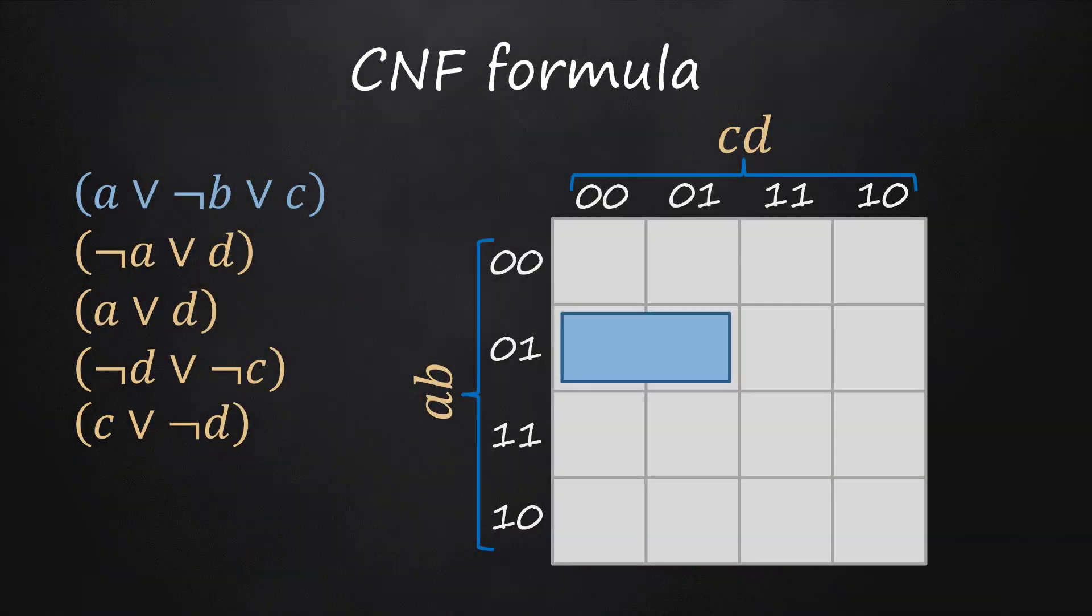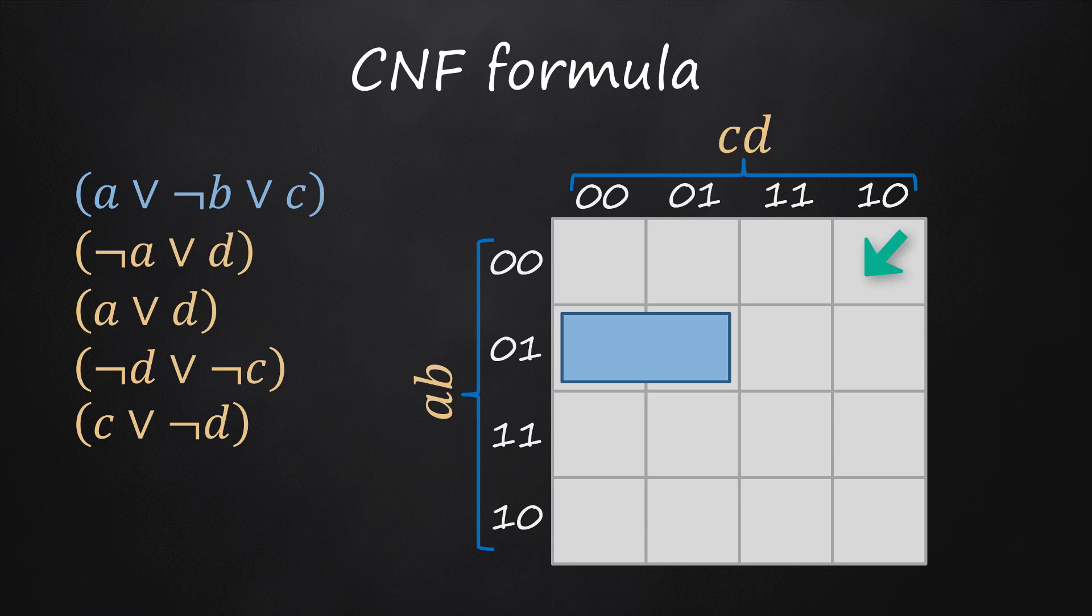Let us consider the following example of a formula with five clauses. The 16 cells of this grid represent the 16 possible interpretations of the variables a, b, c, and d.